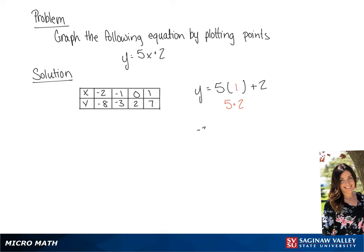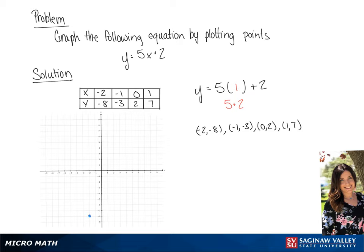We have negative 2, negative 8; negative 1, negative 3; 0, 2; and 1, 7. We only really need 2 points, but graphing a few more ensures our accuracy.